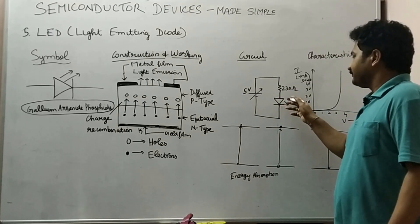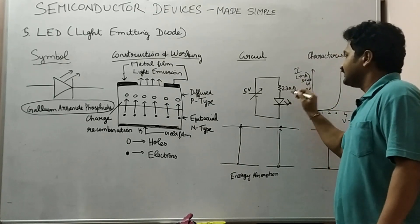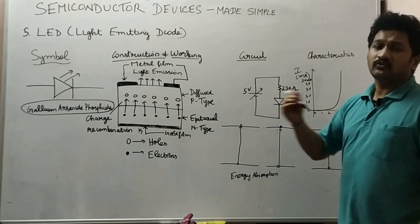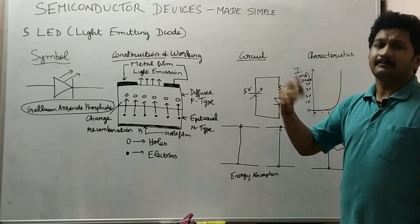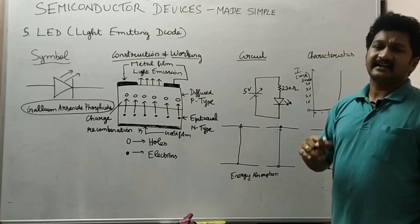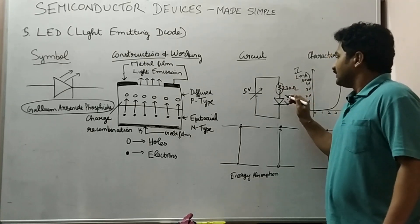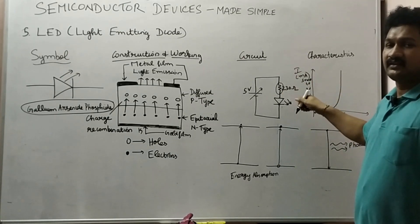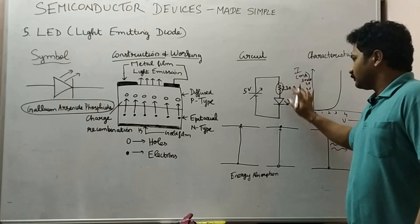When we connect an LED in series with 5 volts and 230 ohms, we observe some characteristics of the LED. This 230 ohm resistor is connected because the LED has a maximum current it can withstand. If current beyond the specification — such as more than some hundred milliamps — is supplied, the LED gets damaged. So the 230 ohm resistor protects the LED from very high current.